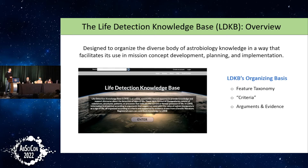I'm going to talk briefly about three axes of organization for this knowledge base. One is a taxonomy of what we call features — potential biosignatures. A second is criteria for assessing those features. And finally, arguments and evidence — I'll explain in a minute what that means.